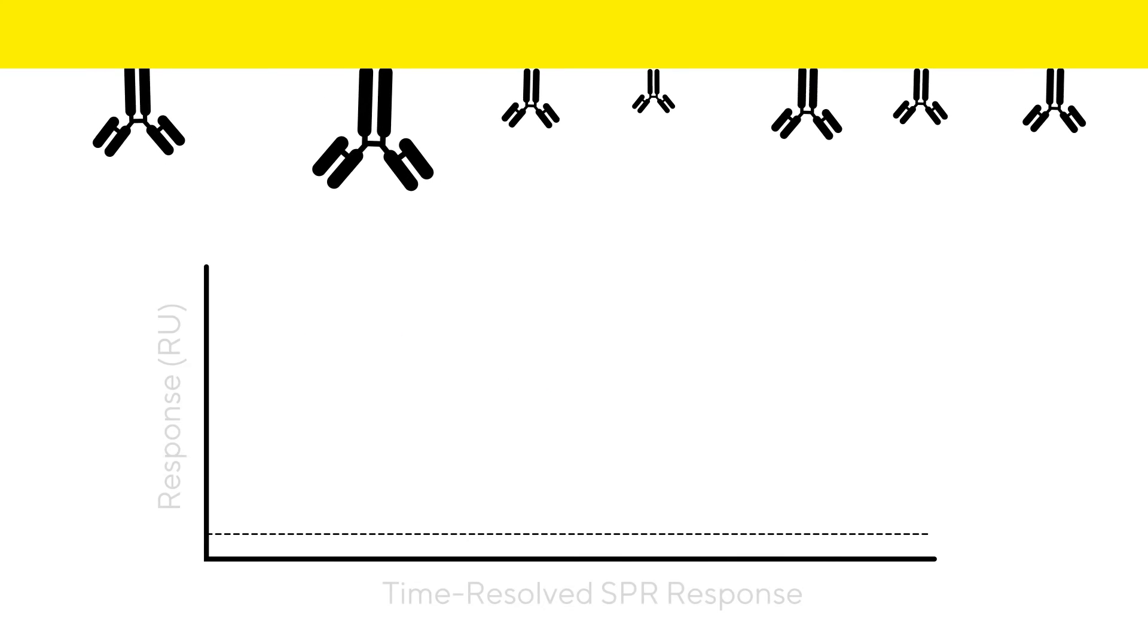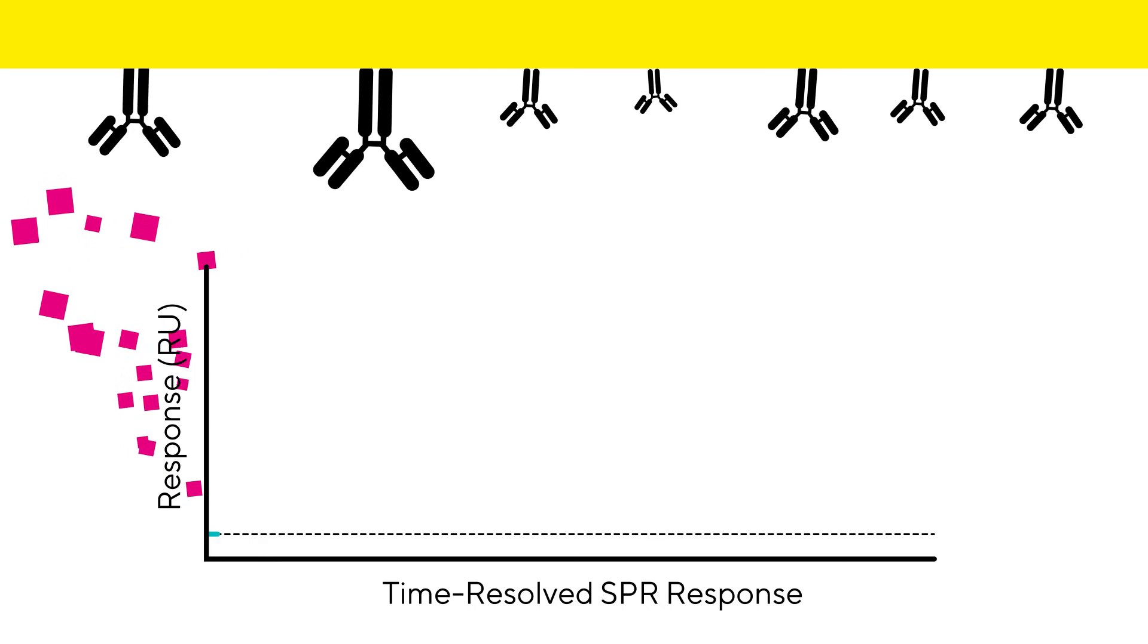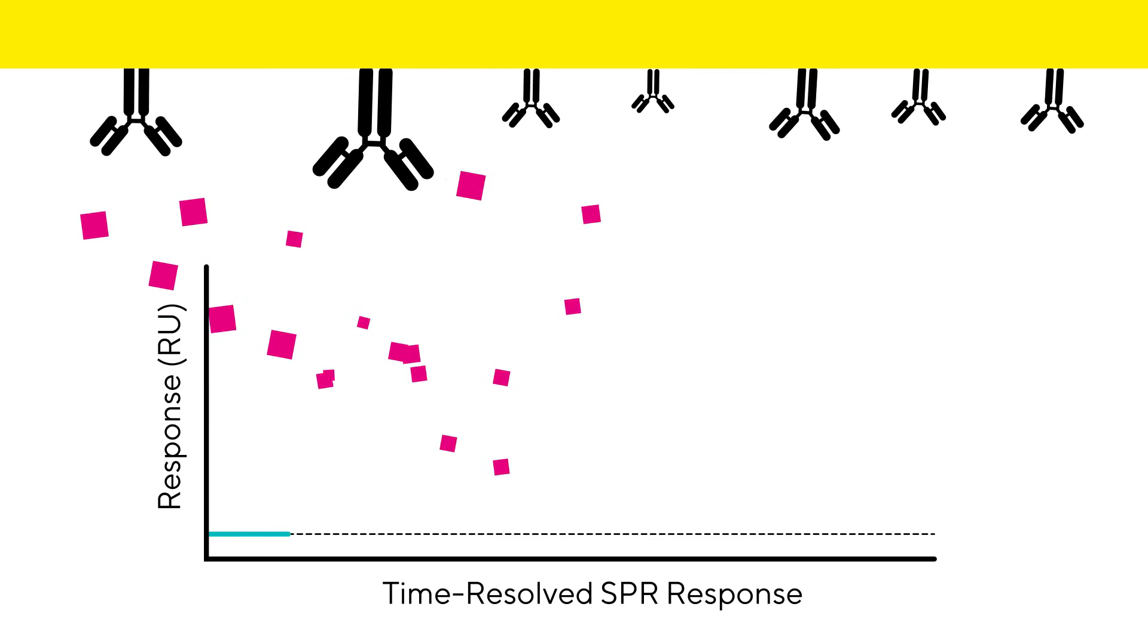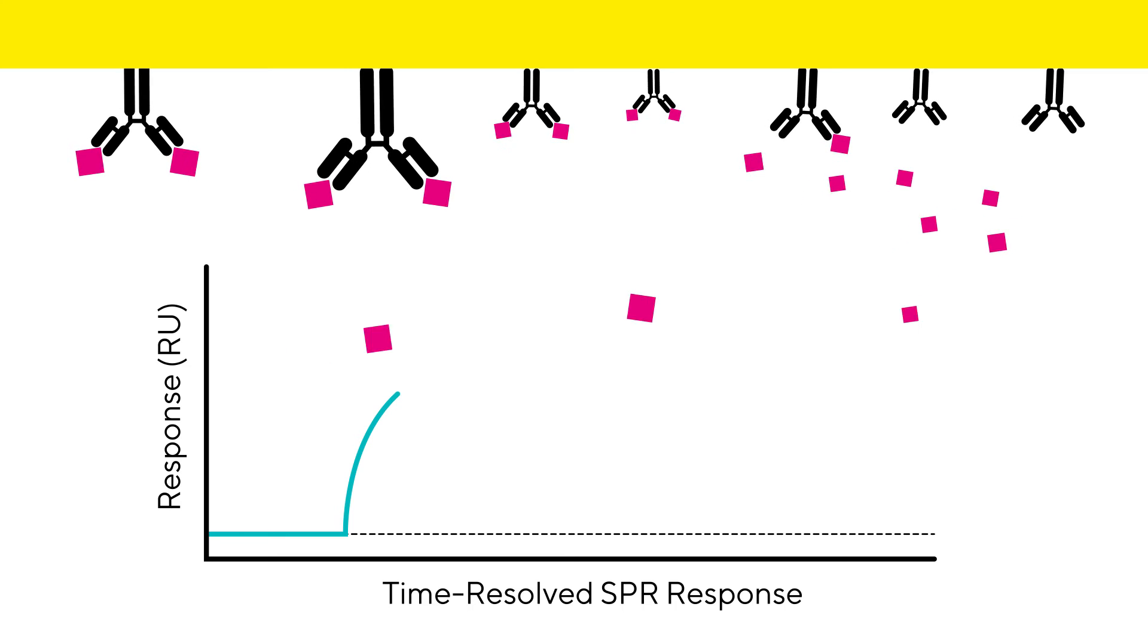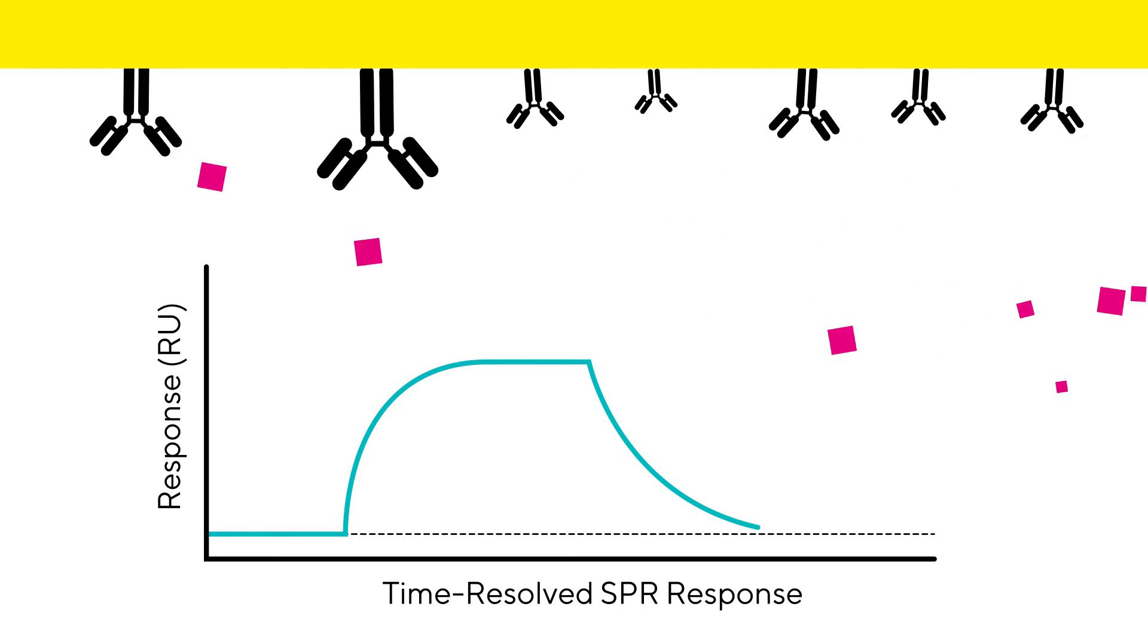When a sample containing an analyte of interest is injected over the sensor chip, any binding of the analyte to immobilized ligands on the chip causes a change in the refractive index at the surface, resulting in a shift in the angle of total reflected light.